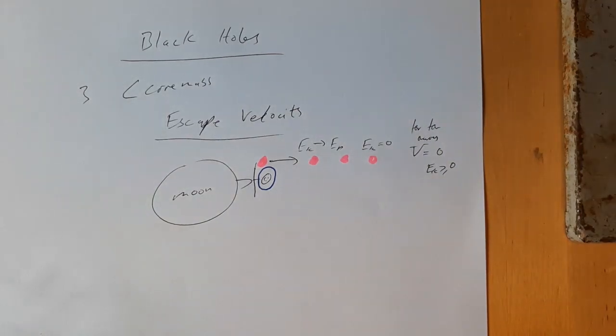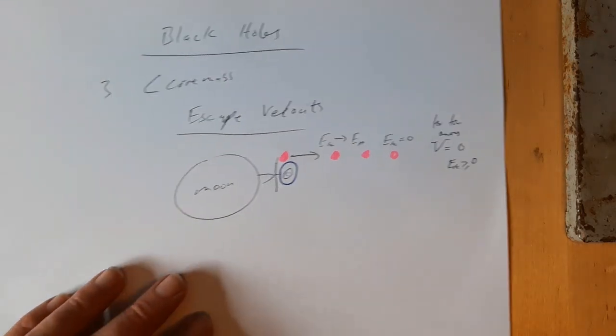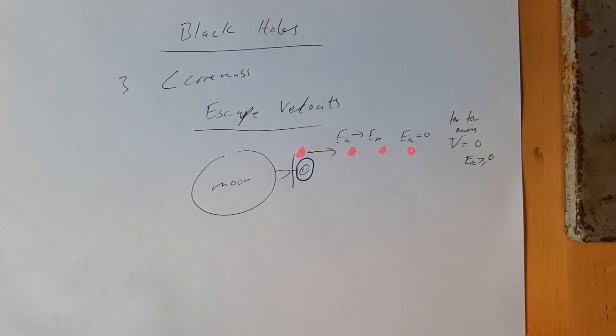Now that suggests that you can escape from all objects, but then there's a problem isn't there? And what I'm about to teach you is on the specification. It's always how people start teaching black holes. It's an awkward marriage of Newtonian physics, where we're going to use the physics that we've taught you, but also we're going to make a very brief reference to special relativity. And to be honest it doesn't quite work in this way in reality, but this will give you a good feel for it.